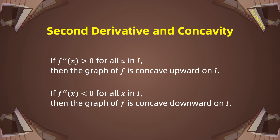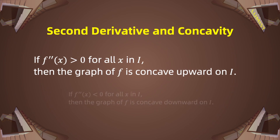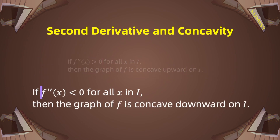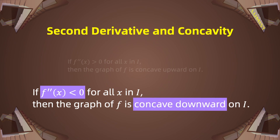Concavity is strongly related to the second derivative. If a function f is defined and twice differentiable on an open interval i, then if the second derivative f''(x) is greater than 0 for all x in i, the graph of f is concave upwards on i. And if f''(x) is less than 0 for all x in i, then the graph is concave downwards on i.